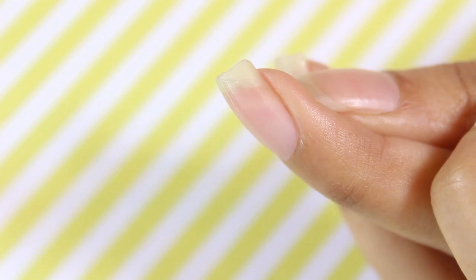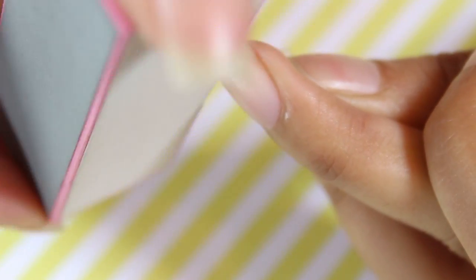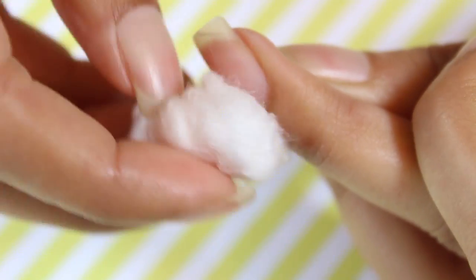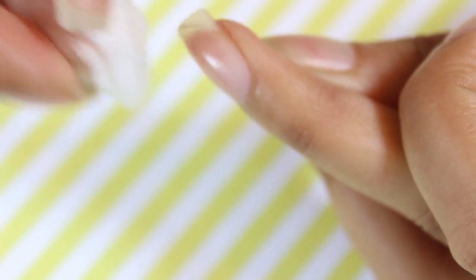I start off by smoothing over the cracked nail with a nail buffer. Then I use a cotton ball and nail polish remover to clean over the surface of the nail to make sure that it is clean.